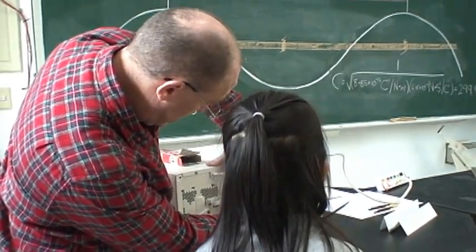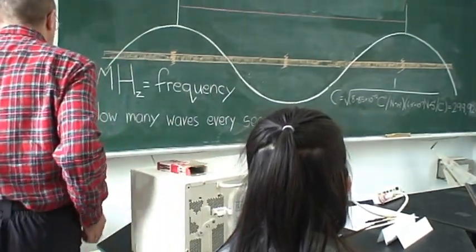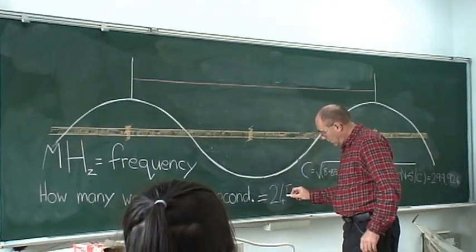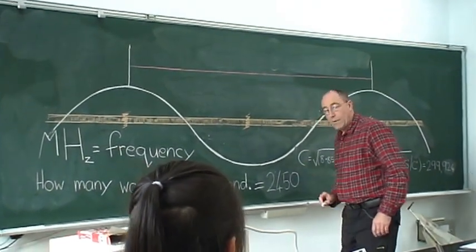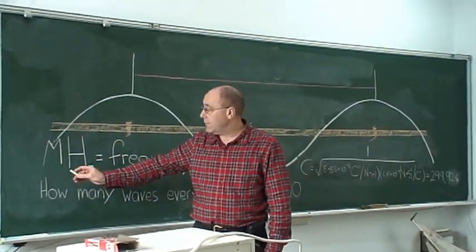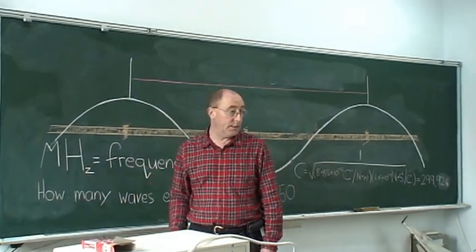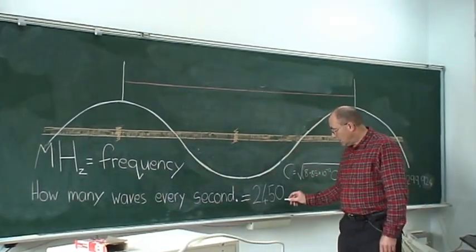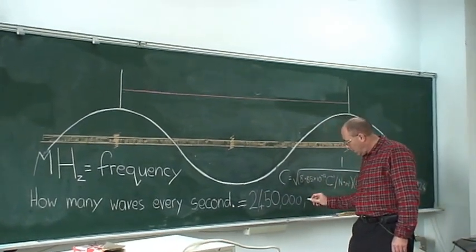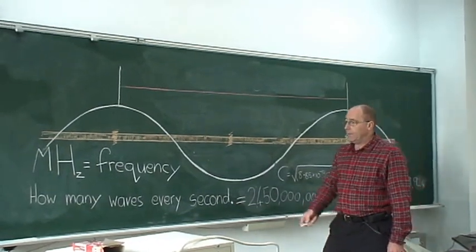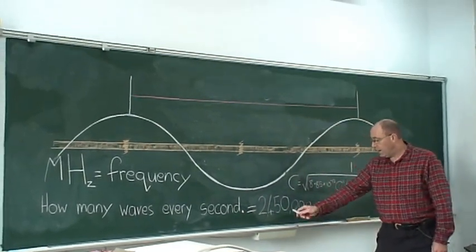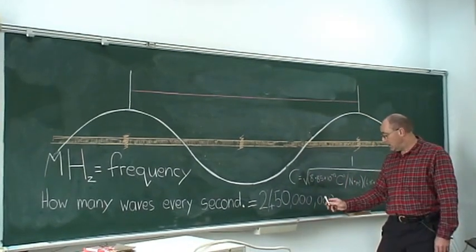The student reads: two, four, five, two — then again: two, four, five, four. The microwave says MHZ on the back. M means million. So we've got 2450, and I've got to put a million after it — that's six zeros. So how many waves every second? Two, four, five, zero, zero, zero, zero, zero, zero waves every second when you count one.